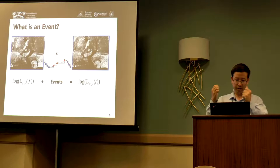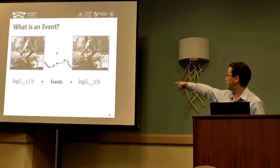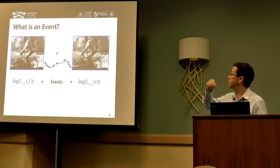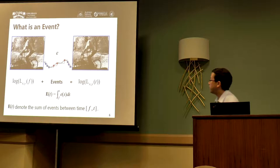If we integrate this event data between two time instances, for example the reference time f and our current time t, we will have this equation. This means if we take the log operation and integrate the event, we can have the current intensity signal by integrating during this time interval.